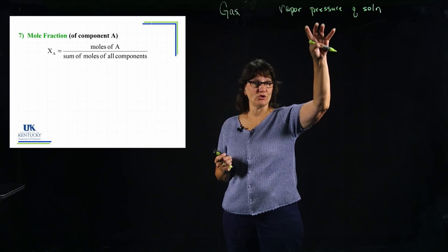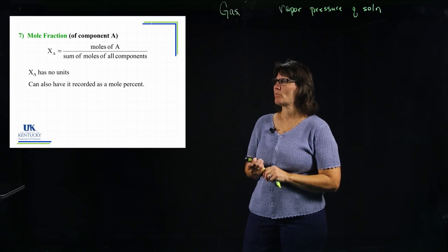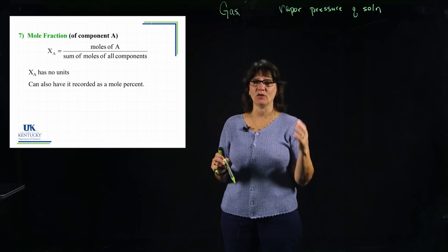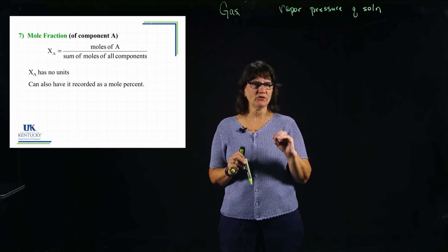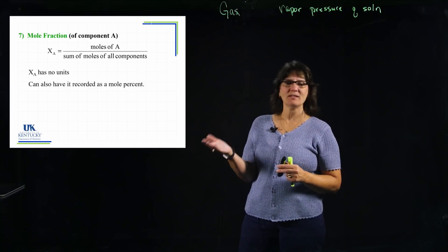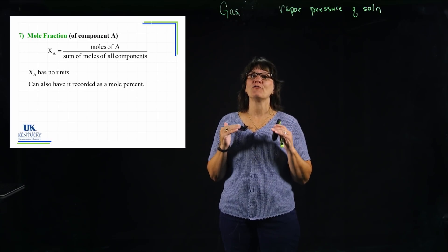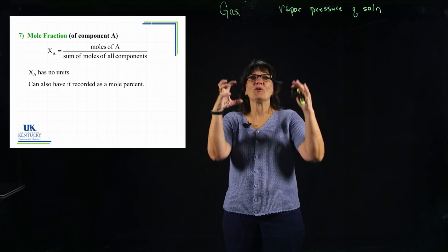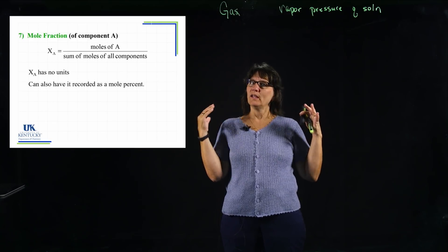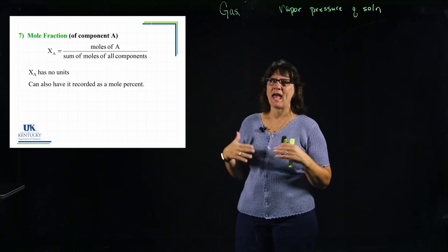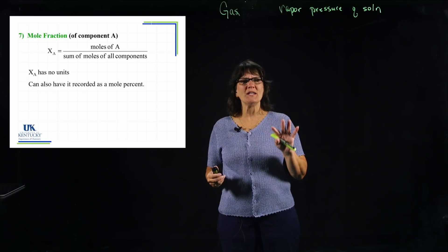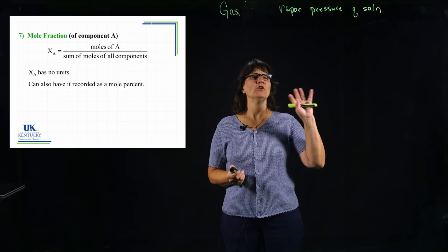When you do a mole fraction, you have moles in the numerator and moles in the denominator, so they cancel and this is a unitless term. You can also have a mole percent — anytime you have a fraction you can turn it into a percent by multiplying by 100. It's part over whole: the part is moles of the one substance, the whole is moles of everything. Mole percent is just that times 100.